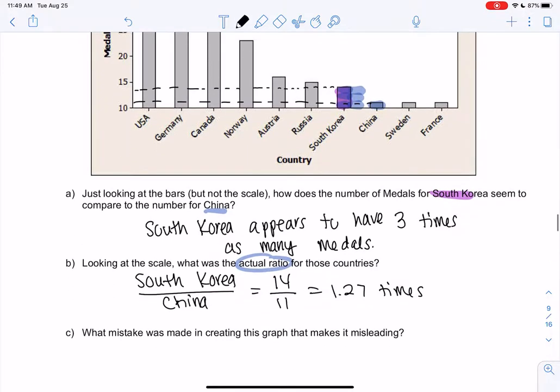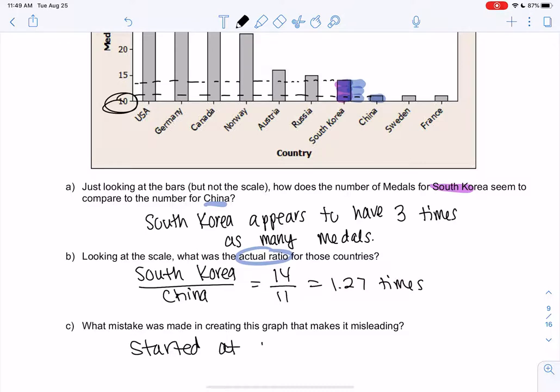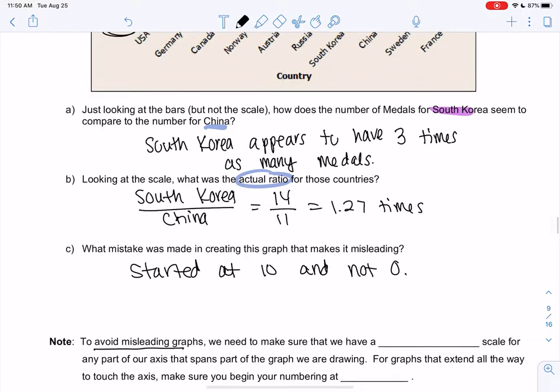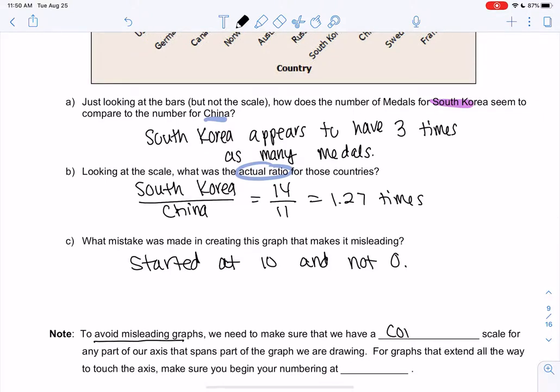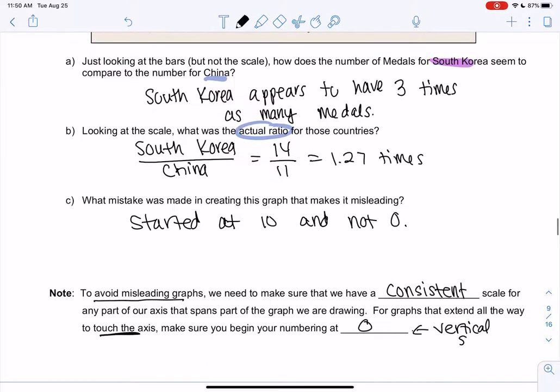And so the mistake is that they started at 10 and not zero. So when we're doing these vertical frequencies to avoid misleading graphs, we need to make sure we have a consistent scale. That's one thing. So sometimes someone might do 5, 10, 15, 20, which is consistent. But 1, 2, 4, 7 is not consistent. We need to count by the same number for our entire axis. And if they do touch the axis, we need to make sure they start at zero. So for the vertical scale, by not starting at zero, we made South Korea look a lot bigger than China, and that was misleading to the reader. We want someone to look at our graphs and immediately be able to make conclusions. The whole point of a graph is so someone doesn't have to read the fine print, and they can make fast conclusions.